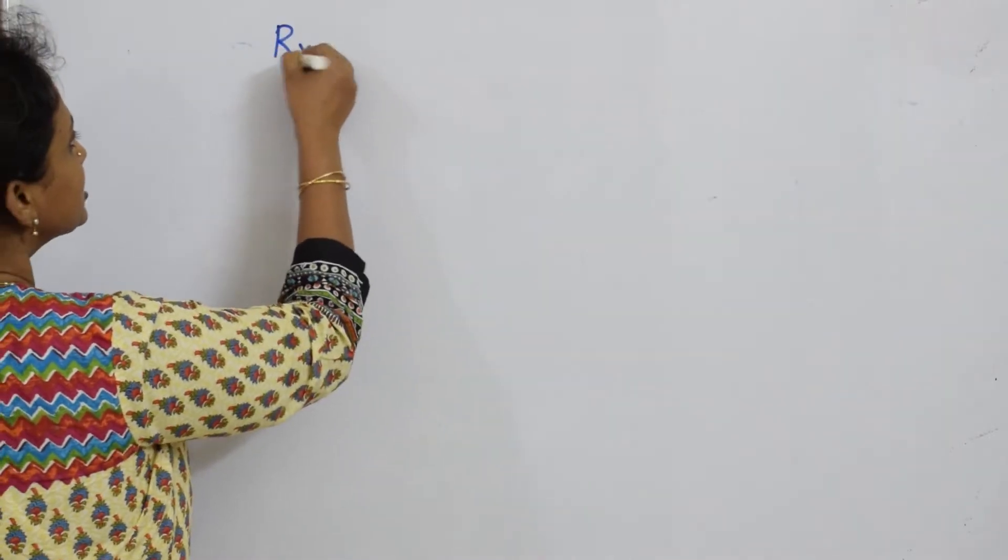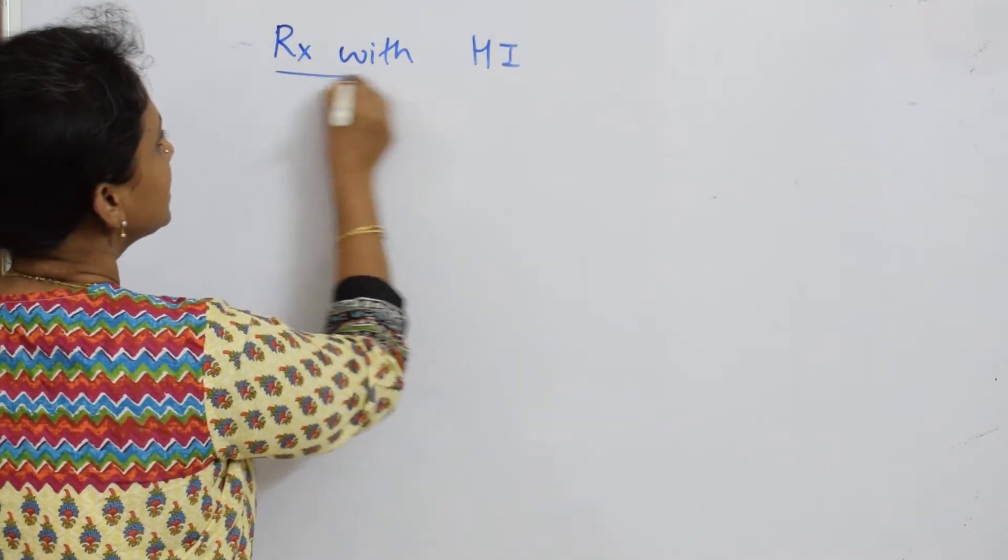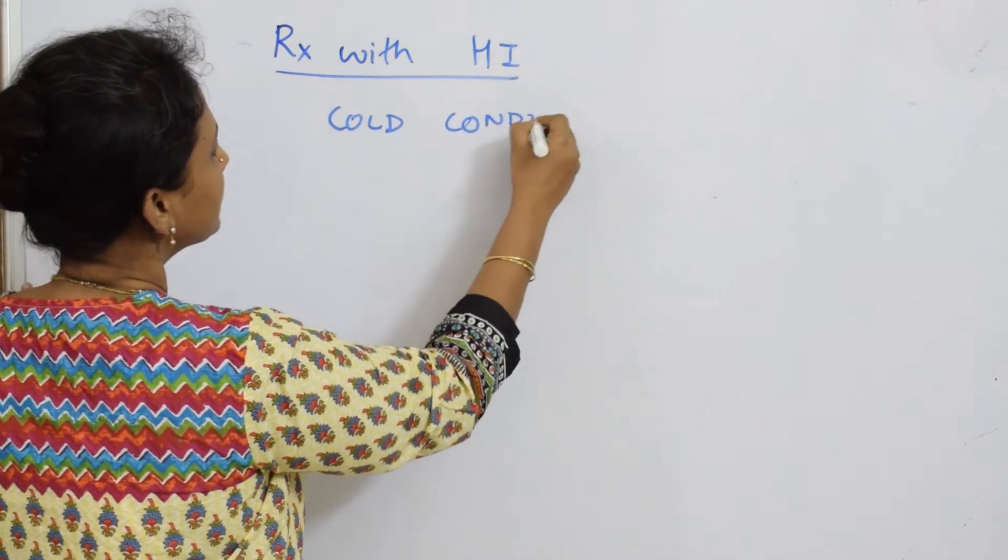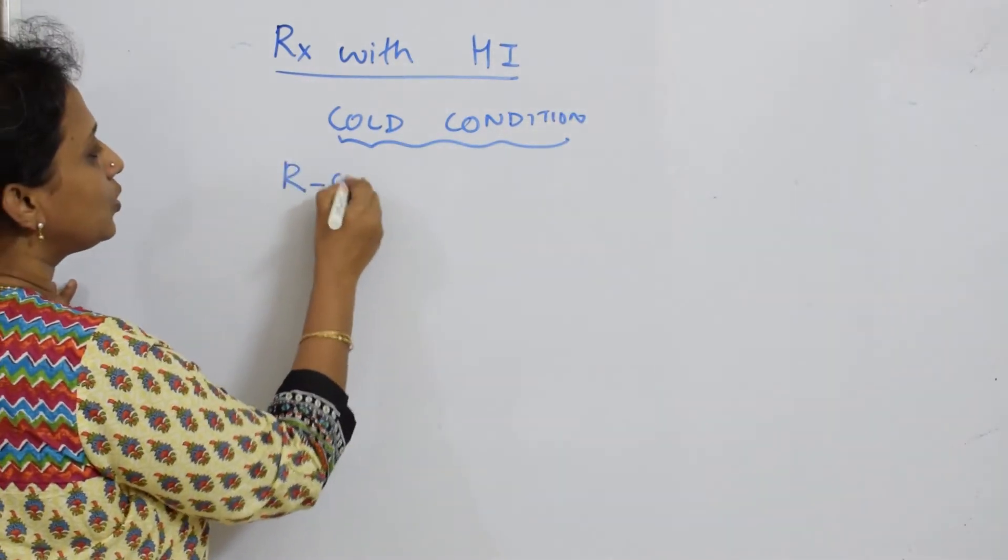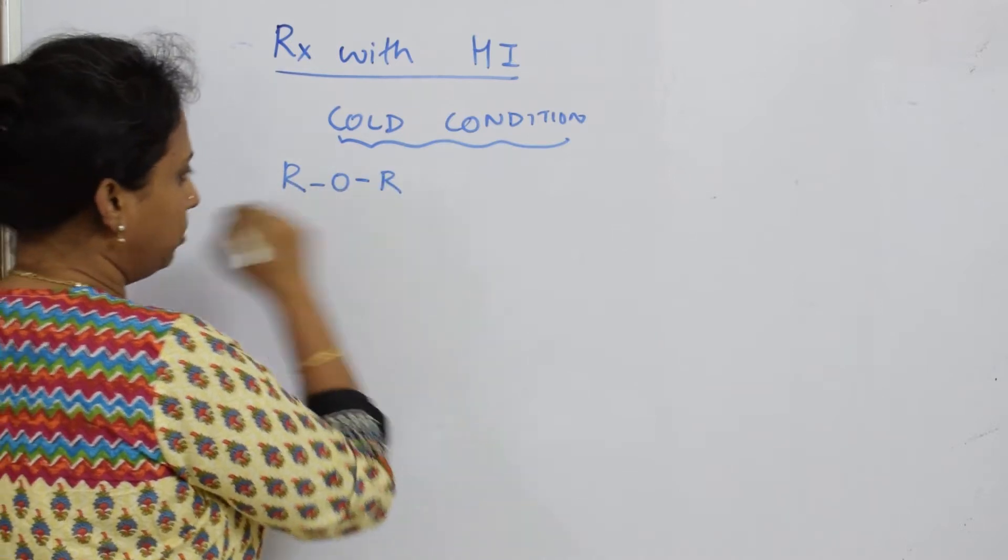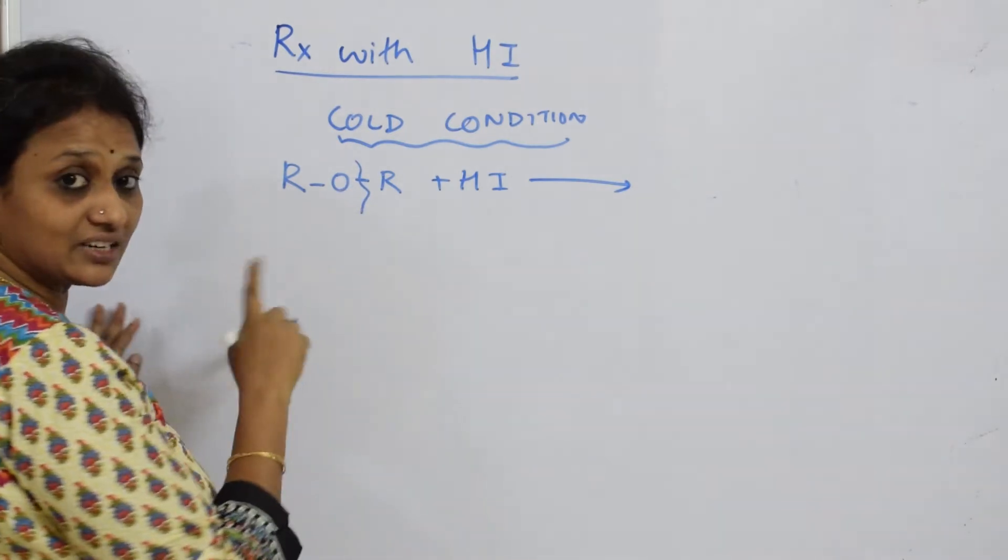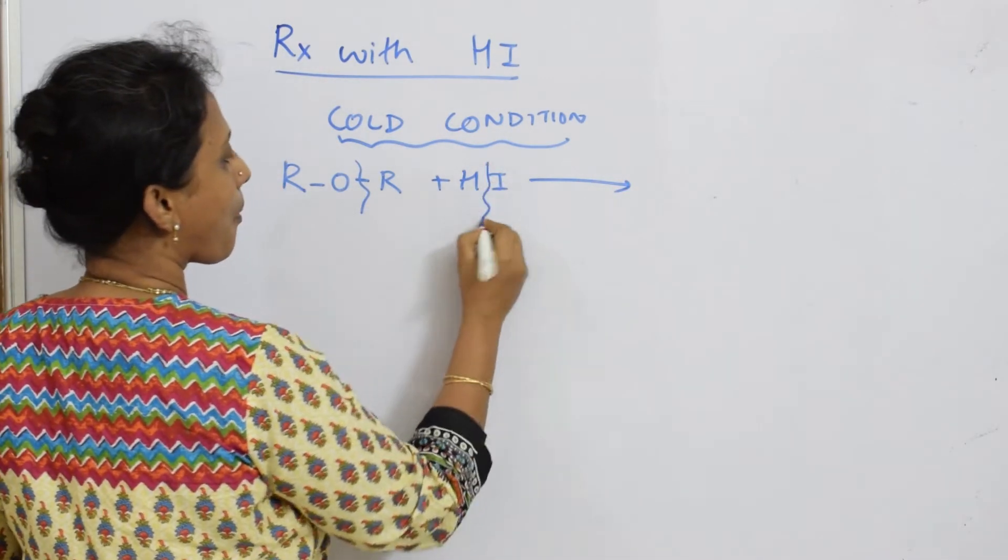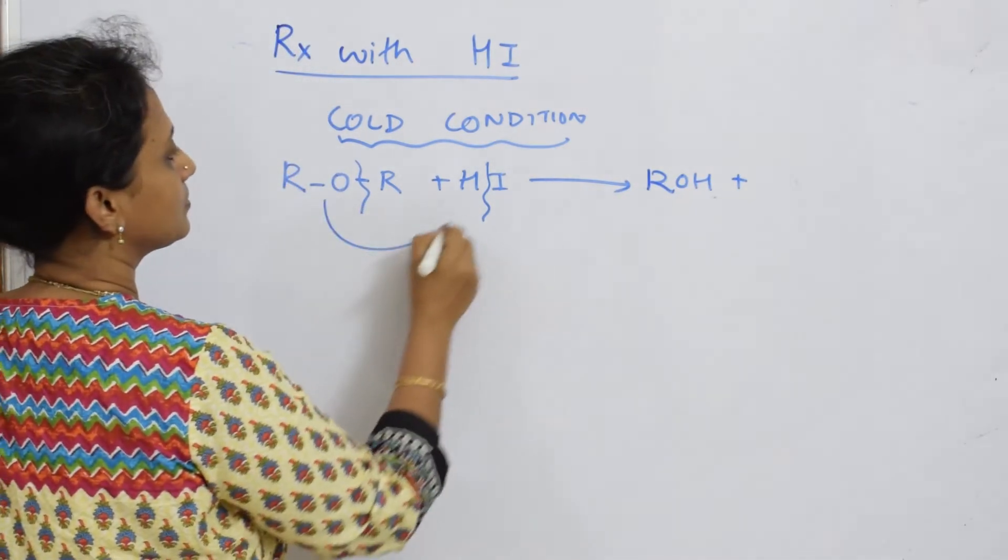Now I said reaction with HI, correct? I'm going to pick up the cold condition and show you the reaction. Under cold condition, what did we write? R-O-R with HI is going to break up—just leave it here, anywhere either side—you get ROH plus RI. This is what we have done in the cold.